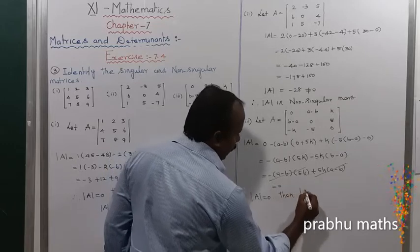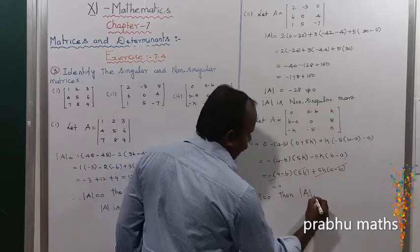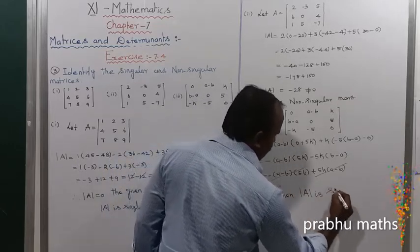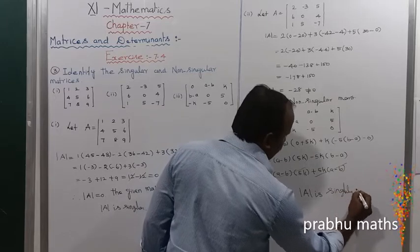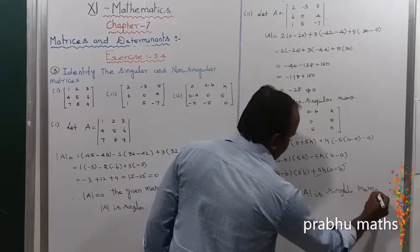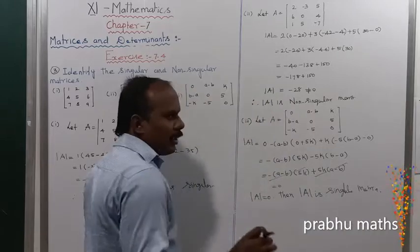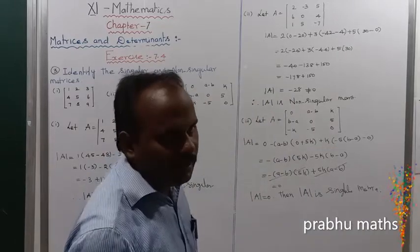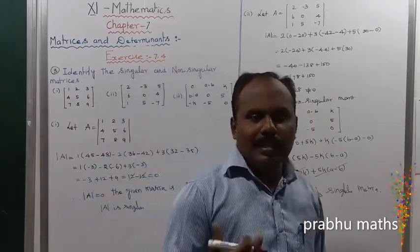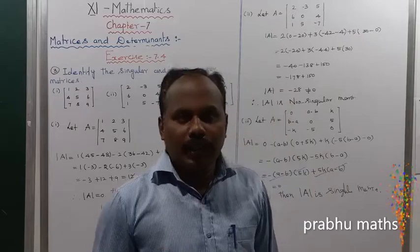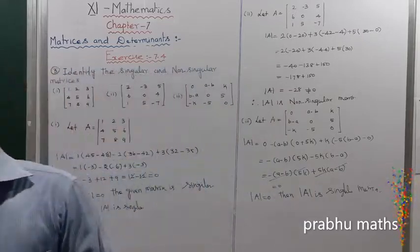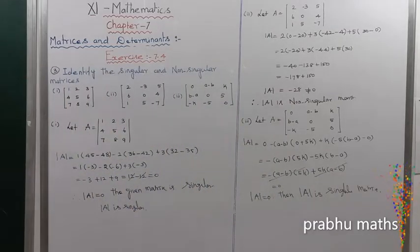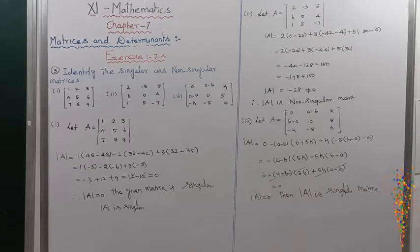Therefore, det(A) is equal to 0, so the matrix is a Singular matrix. To summarize: Singular matrix means det(A) is equal to 0. Non-Singular means det(A) is not equal to 0. That is the condition of Singular and Non-Singular matrices.